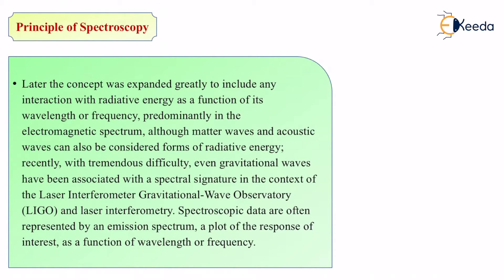Moving further — Sir Isaac Newton gave us that initial concept. Later, the concept was expanded greatly to include any interaction with radiative energy as a function of its wavelength or frequency. Newton's concept was that whenever light passes through a prism it gets dispersed, showing various colors due to different wavelengths. But today spectroscopy is not only that — it includes any interaction with radiative energy, which is nothing but electromagnetic waves as a function of its wavelength or frequency. This radiative energy has two characteristics: wavelength and frequency.